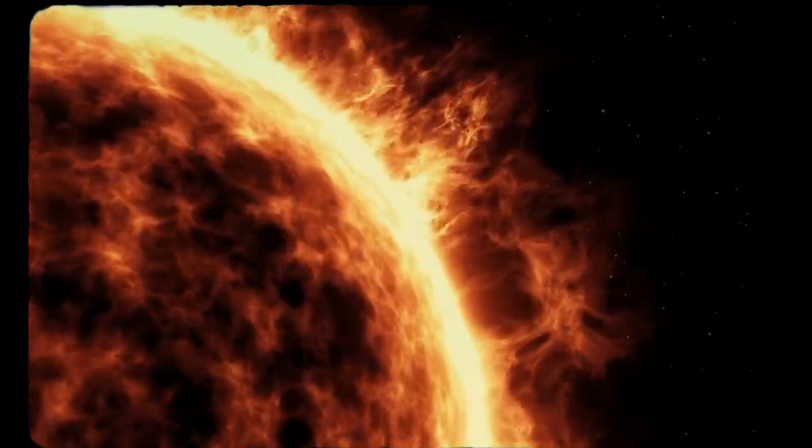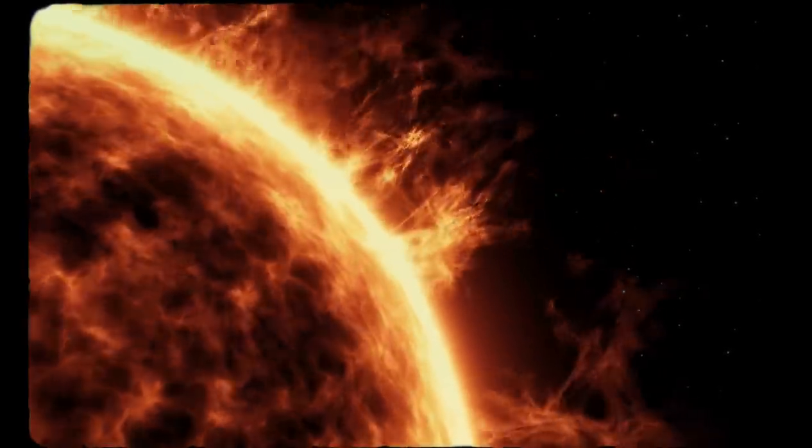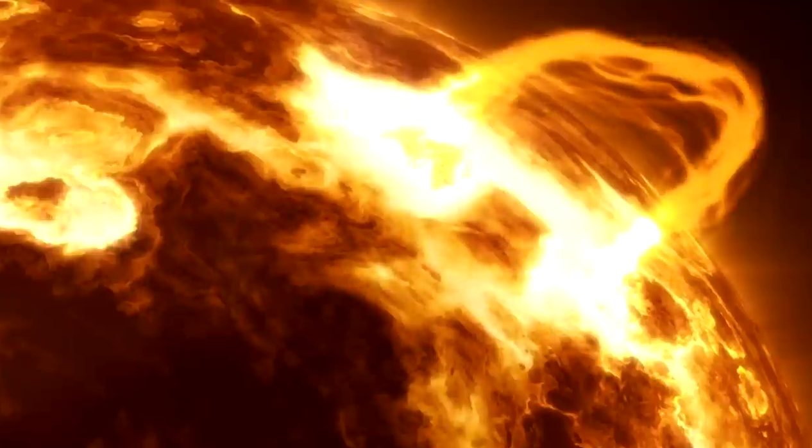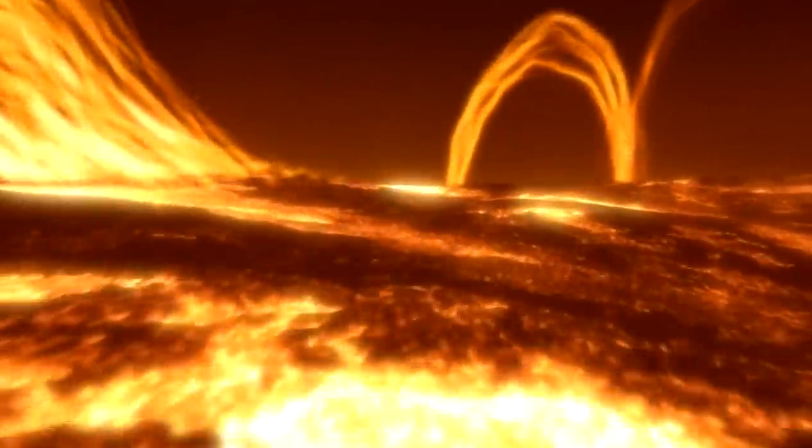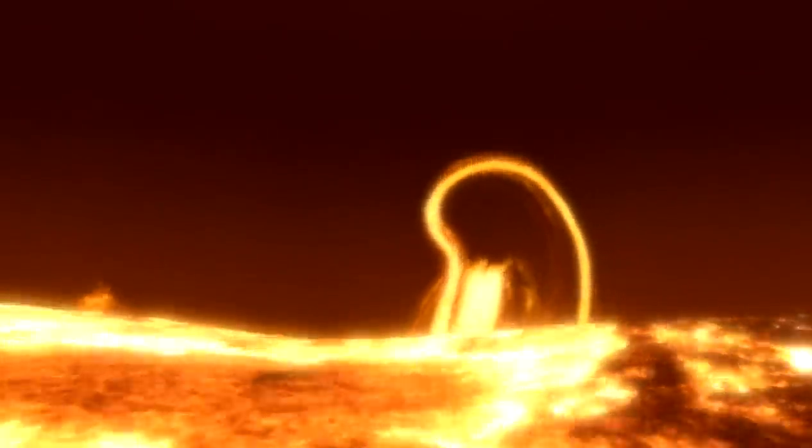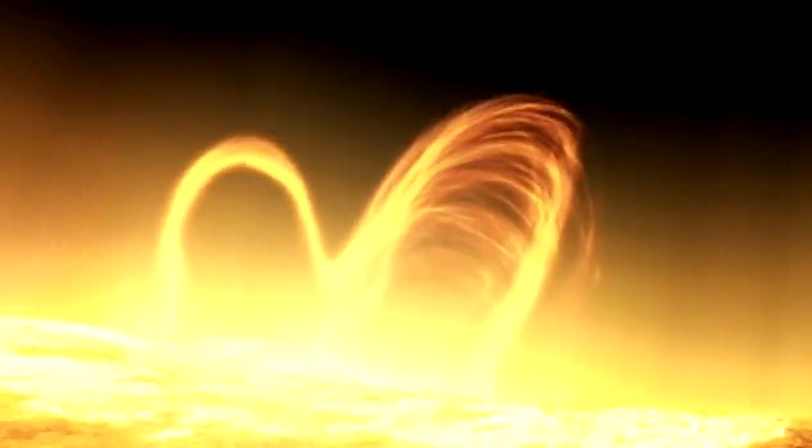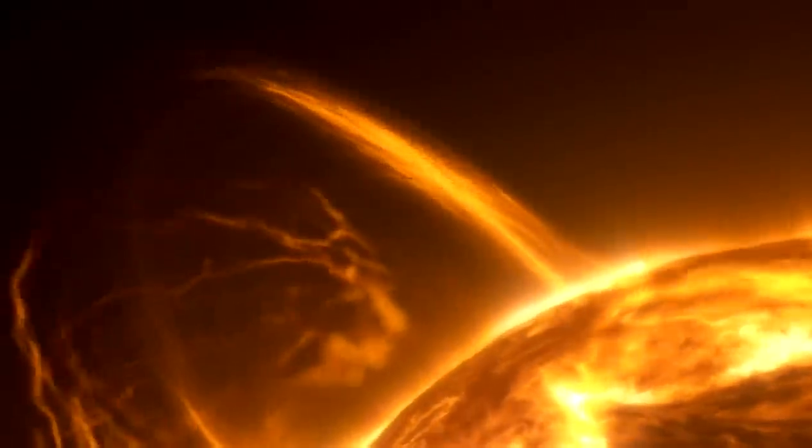Even while our Sun regularly encounters coronal mass ejections that blast off small fragments of its outer atmosphere, astronomers have never witnessed such a large percentage of a star's visible surface get thrown into space. As a result, surface mass ejections and coronal mass ejections can happen independently of one another.